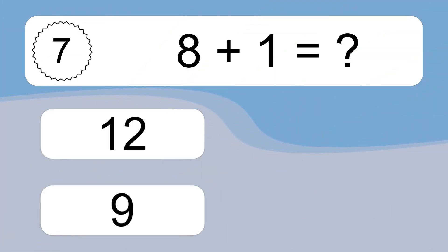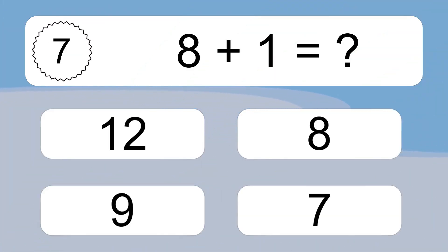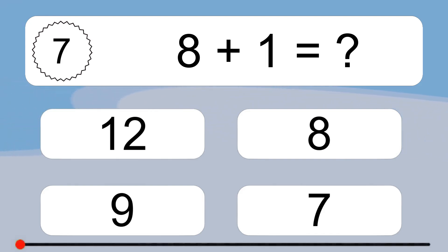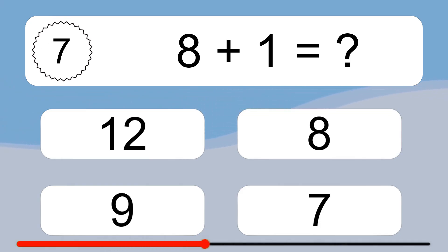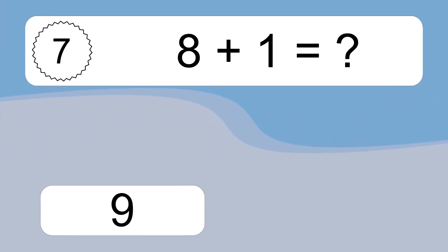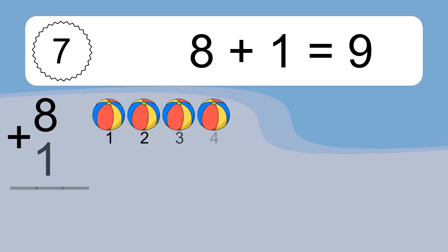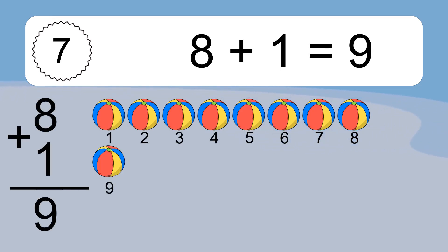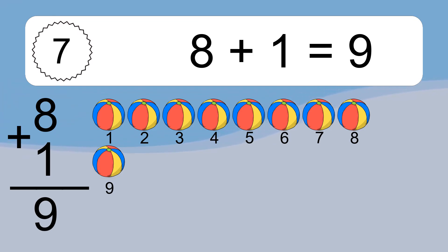8 plus 1 equals what? 8 plus 1 equals 9. Let's count it: 1, 2, 3, 4, 5, 6, 7, 8, 9.